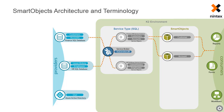Now suppose we want to expose data from an HR SQL database as smart objects. Because we are connecting to another SQL database, we add another service instance of the SQL service broker configured to connect to the HR SQL database. We have to create a separate service instance because this instance points to the HR SQL database, while the first instance points to the finance database. The same discovery procedure occurs and the entities in the target database are exposed as service objects. If we want, we can now auto-generate or manually create smart objects for those service objects.